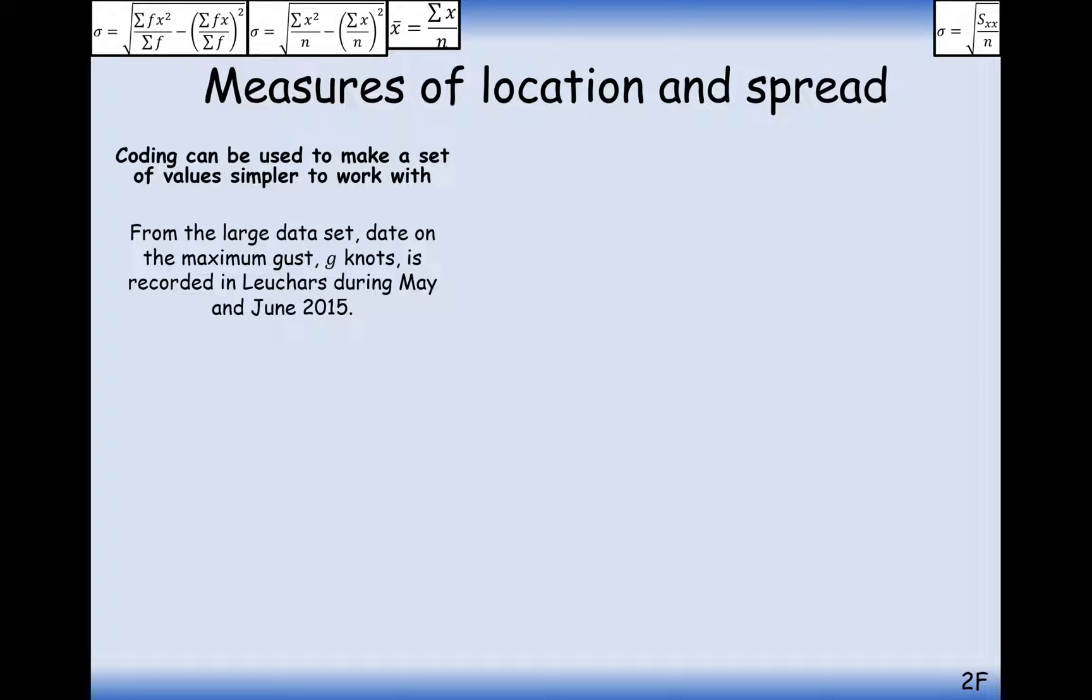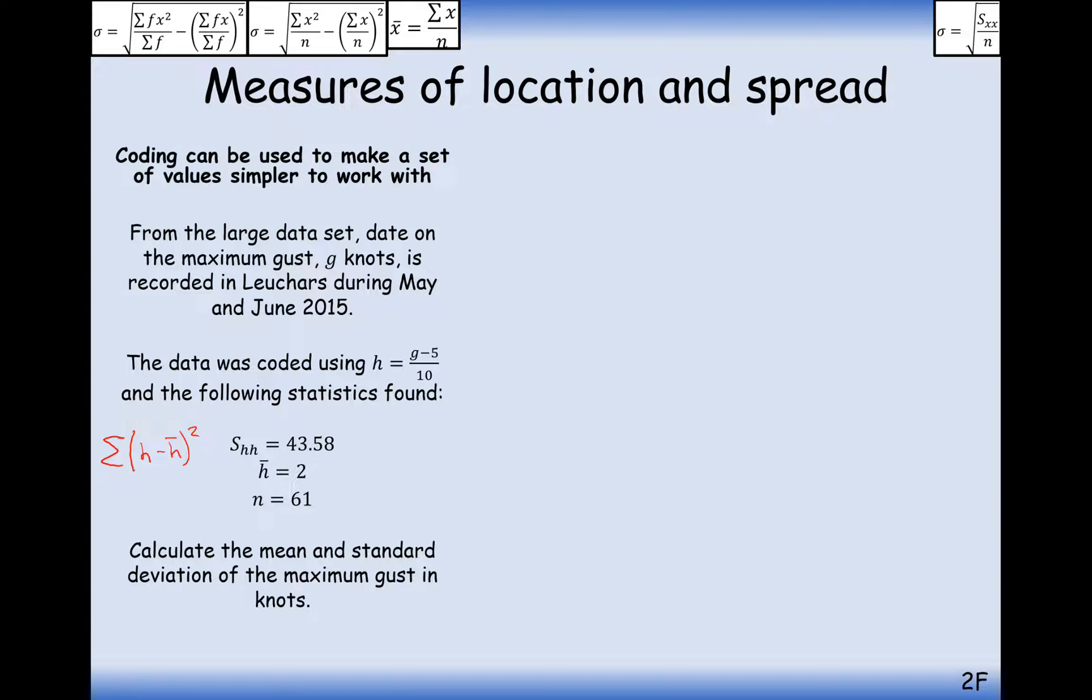All right, then let's have a go at some more questions like this. So from the large data sets, we have the maximum gusts in Lacazze on May and June 2015. The data was coded using H equals G minus 5 divided by 10, and the following statistics were found. SHH equals 43.58. Now, what SHH means, it's effectively the sum of all of the H values subtracted from the mean squared. Okay, so that's what SHH means. And then to work out the standard deviation, you would divide by N and square root. The mean of the H values was 2, and we have 61 data values from May and June.